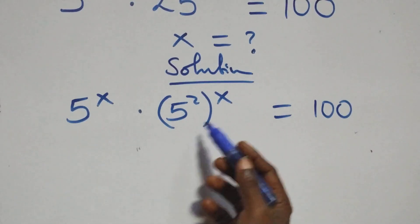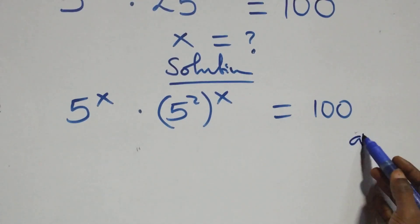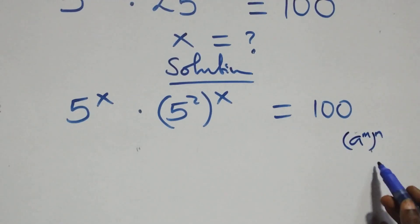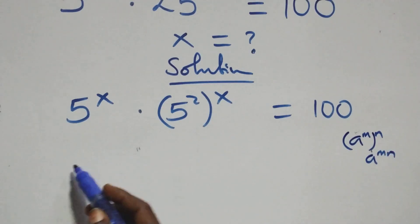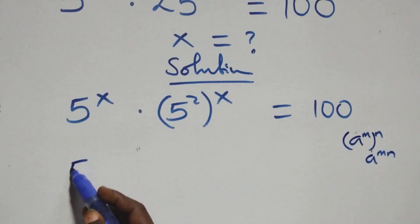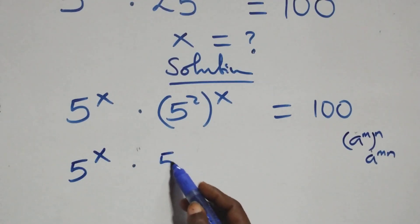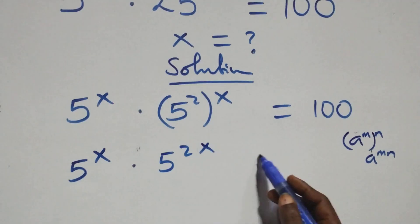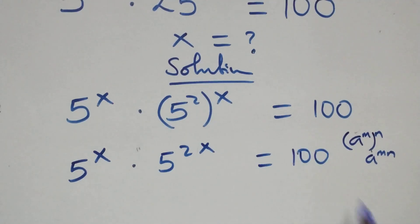Then here we apply the law of indices. When we have 5 raised to power x, times 5 raised to power x, this is the same as 5 raised to power x times 5 raised to power x, equals 100 on this side.